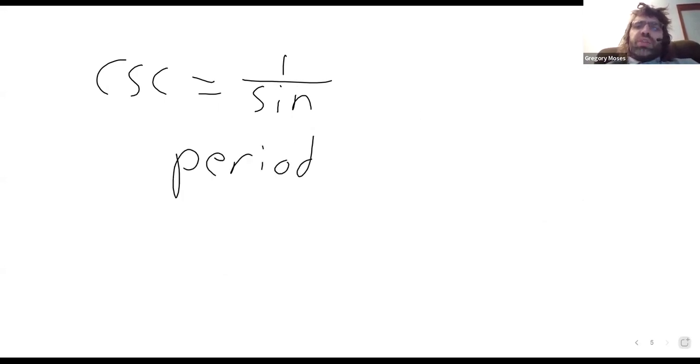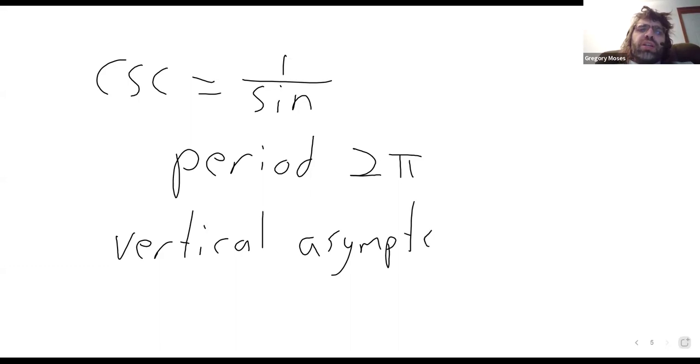It has a period of two pi. The vertical asymptotes are going to be in different places. The vertical asymptotes are going to be at pi and negative pi and 2 pi and negative 2 pi, the integer multiples of pi.